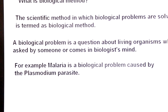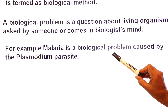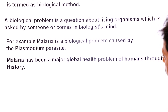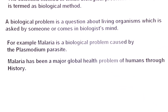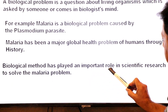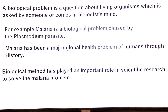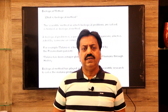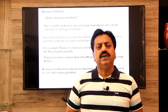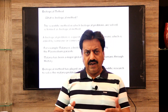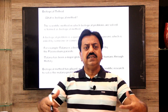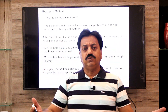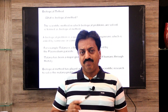A biological problem is a question about a living organism which is asked by someone or comes in a biologist's mind. For example, malaria is a biological problem caused by a malarial parasite — specifically plasmodium. Malaria has been a major global health problem through history. Early concept was that malaria is caused by bad air; in fact, the word malaria means bad air. But when scientists applied the biological method and its steps, it was found that it is not caused by bad air but by a parasite known as plasmodium.